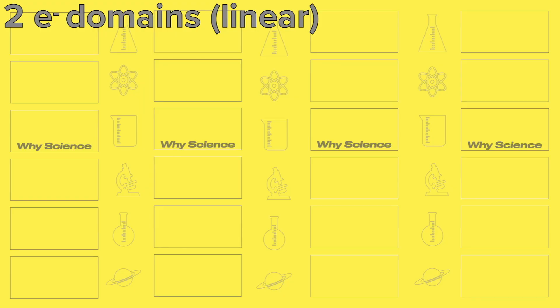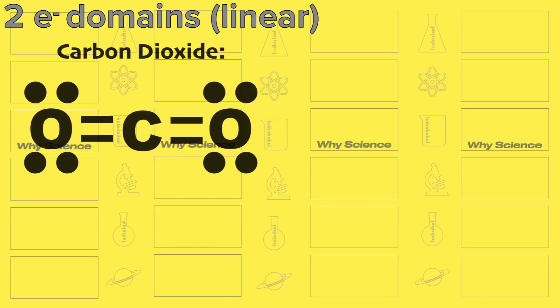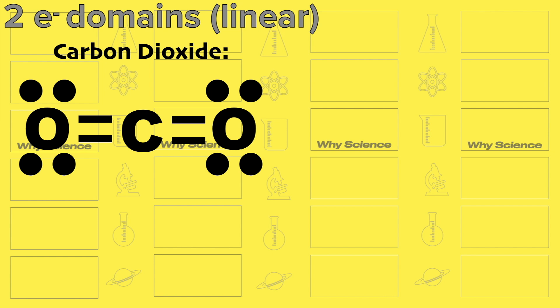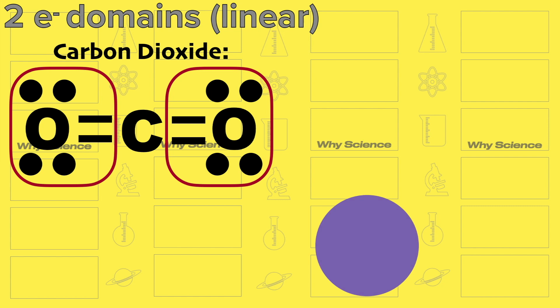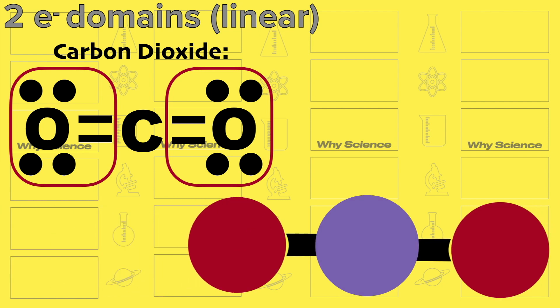Molecules with only two electron domains will always be linear. A good example is carbon dioxide. Carbon has no lone pair but it has two bonds with the oxygen atoms. The formation that will put the two electron domains farthest from each other will be on the opposite sides so we can say that it is linear.